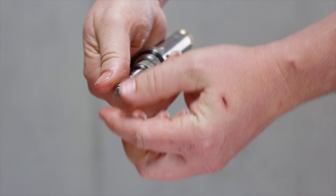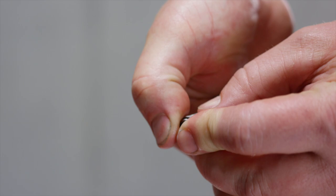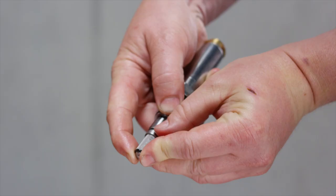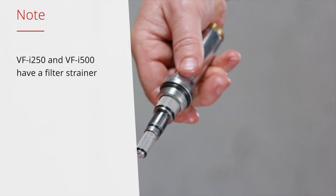Push the new filter strainer onto the pilot valve. Insert the new O-ring into the groove of the pilot valve. Replace second filter strainer analog to the previous one.